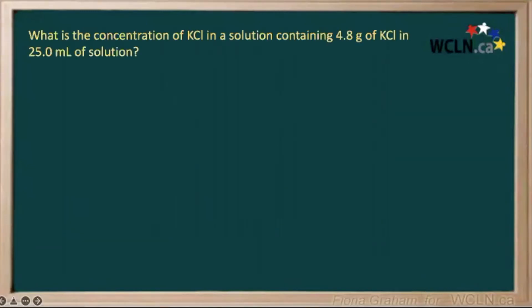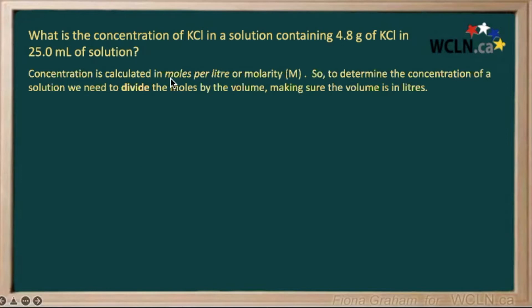The question asks for the concentration of KCl (potassium chloride) in a solution containing 4.8 grams of potassium chloride in 25 mL of solution. To calculate concentration, we need the number of moles per liter — also called molarity. We have 4.8 grams, so our first step is to work out how many moles that is.